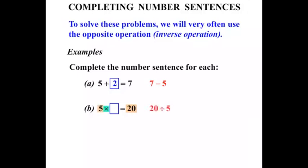The opposite of times is divide, and then we've got 5. So let's think 20 divided by 5, and 20 divided by 5 is 4. So let's check our answer. 5 times 4, does that equal 20? Well yes it does.